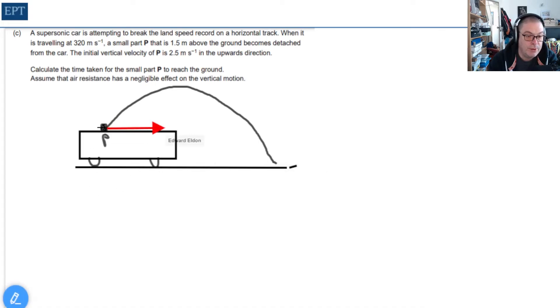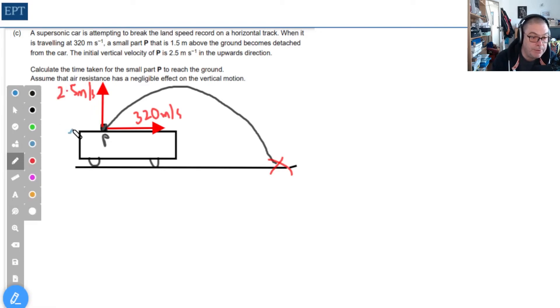The vertical component is 2.5 meters per second and horizontal is 320 meters per second. We're asked to find the time of flight—how long it takes for point P to hit the floor at the red cross. We're also told that part P starts at an initial height of 1.5 meters. I'm going to start by considering how long it takes to get to the top of the flight path, then work out how long it takes to fall from the blue to the red crosses.